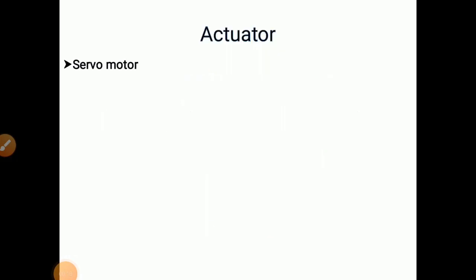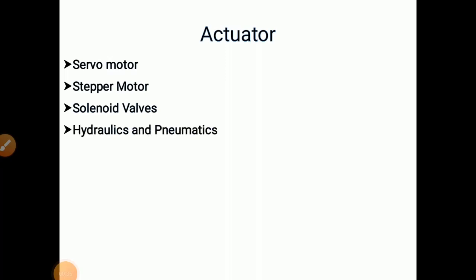So what is an actuator? An actuator is nothing but the device which gives motion to a particular device. The motion can be given either circular or linear — that is called an actuator, which actuates something. There are types: servo motor, stepper motor, solenoid valves, and hydraulic and pneumatic. These are some types of actuators.